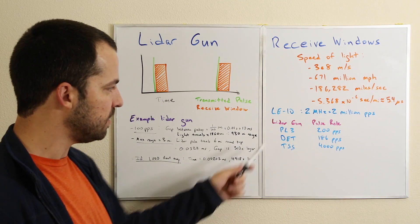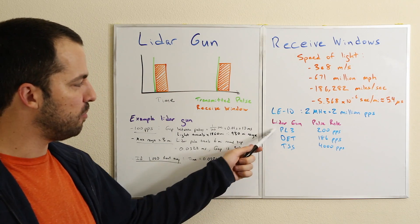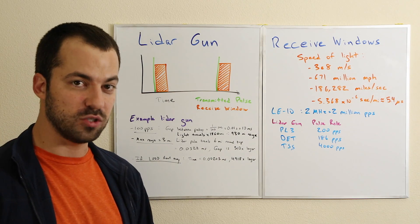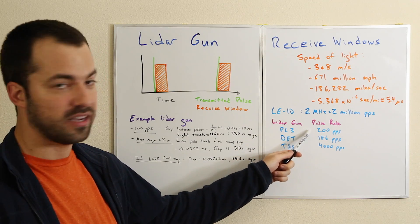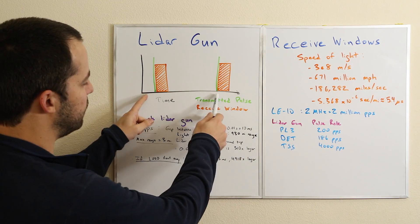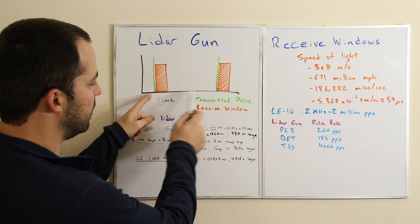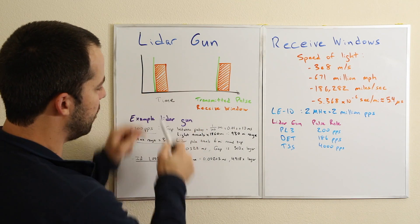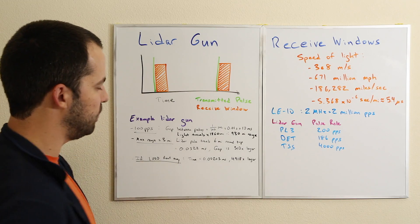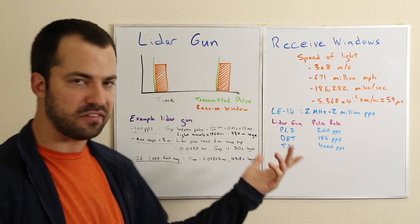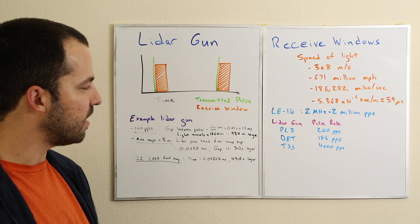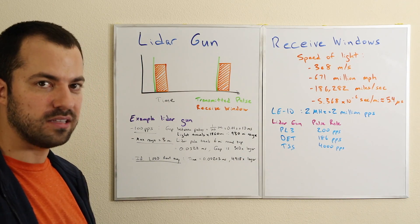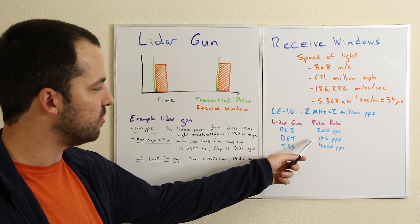Here's a couple common examples: The PL-3, the Kustom Pro Laser 3, is the most popular, most widely used gun on the market. It transmits at 200 pulses per second. At 200 pulses per second, that means twice as many pulses here, so our theoretical max range would be half of 930, which is 465 or so, for the PL-3.